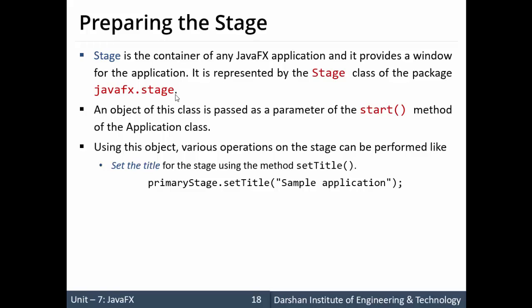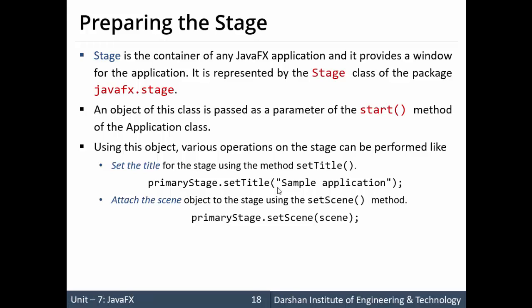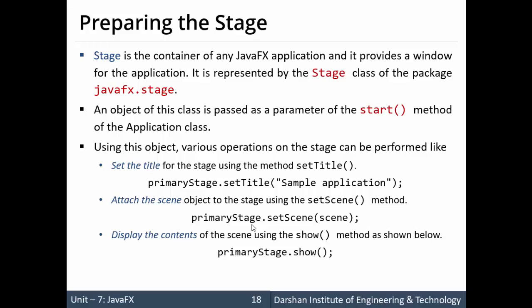Various operations can be performed on the stage using the primaryStage reference passed to the start method. We can set the title with primaryStage.setTitle(), attach the scene with primaryStage.setScene(scene), and finally display the content with primaryStage.show(). These are the simple steps: prepare the scene graph, prepare the scene, and prepare the stage.